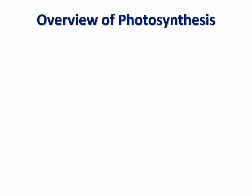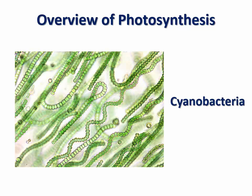Photosynthesis occurs in both prokaryotic and eukaryotic cells. In prokaryotes, only cyanobacteria are known to be photosynthetic. Photosynthetic metabolic processes in these prokaryotes take place in the cytoplasm.